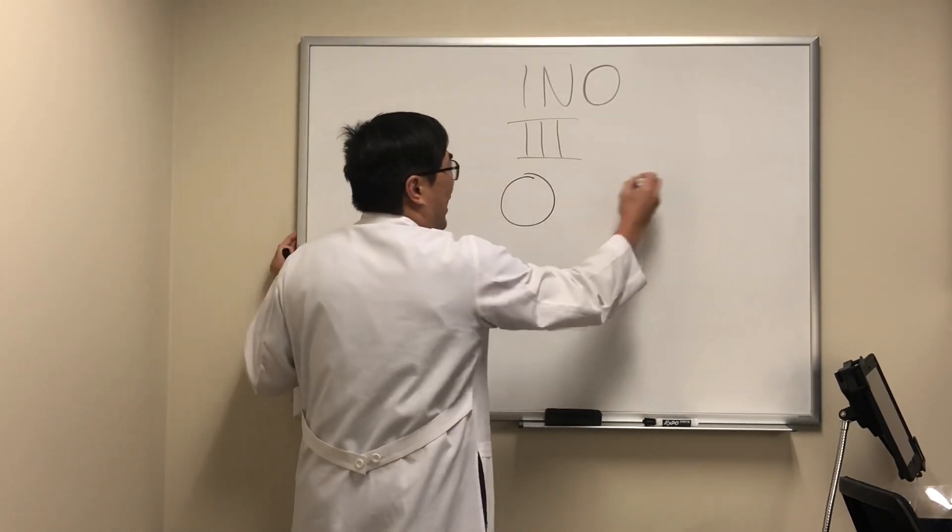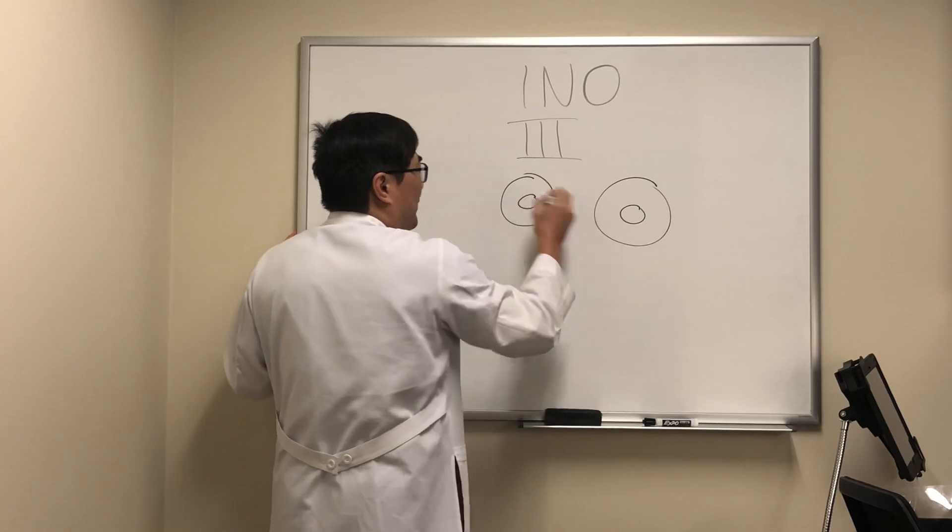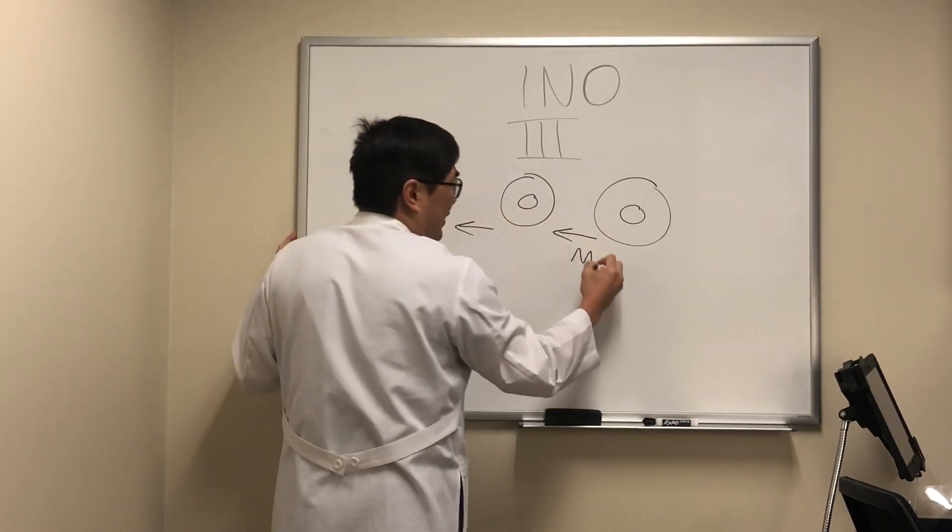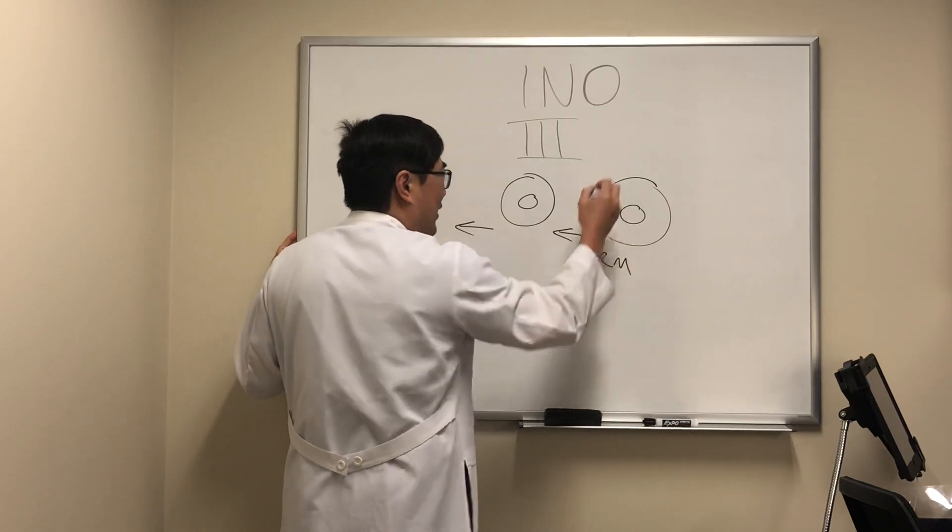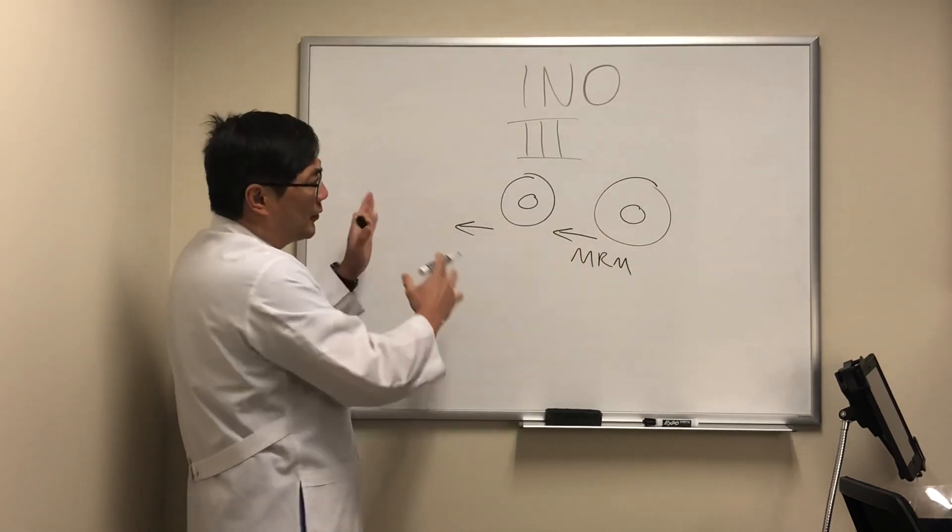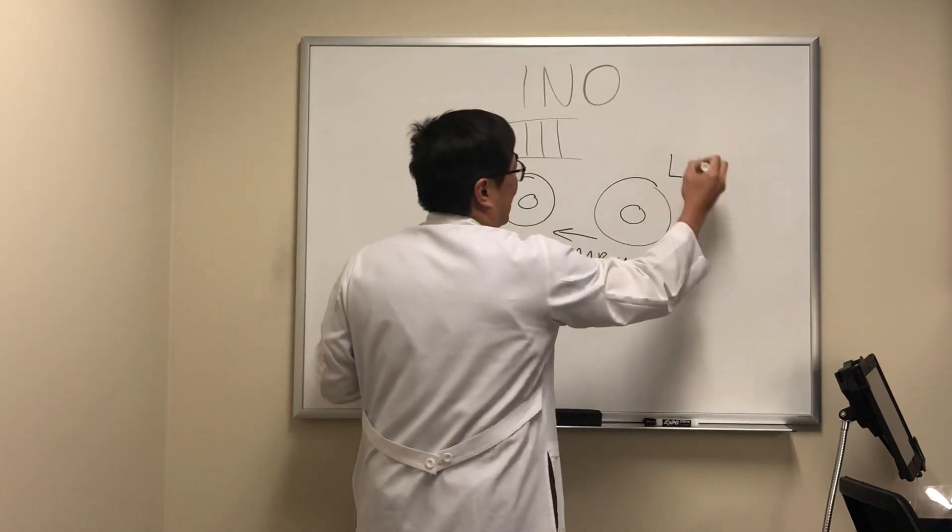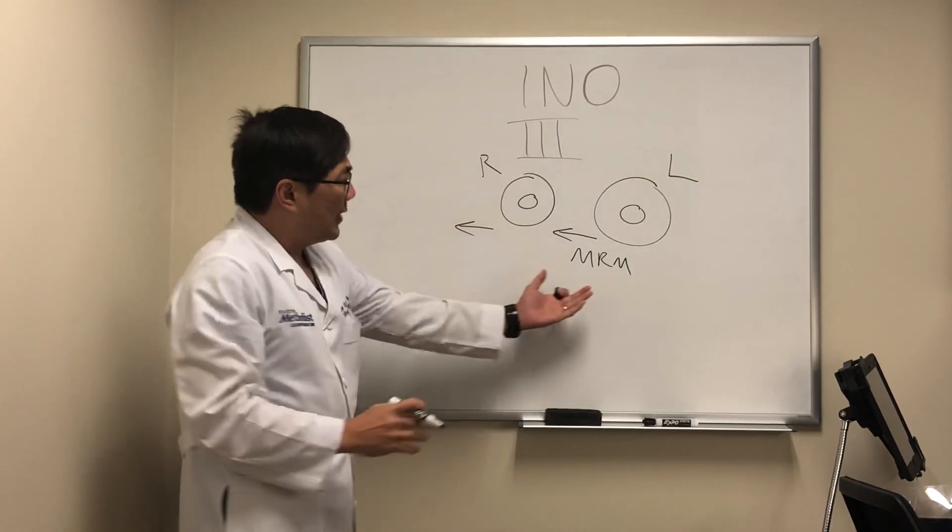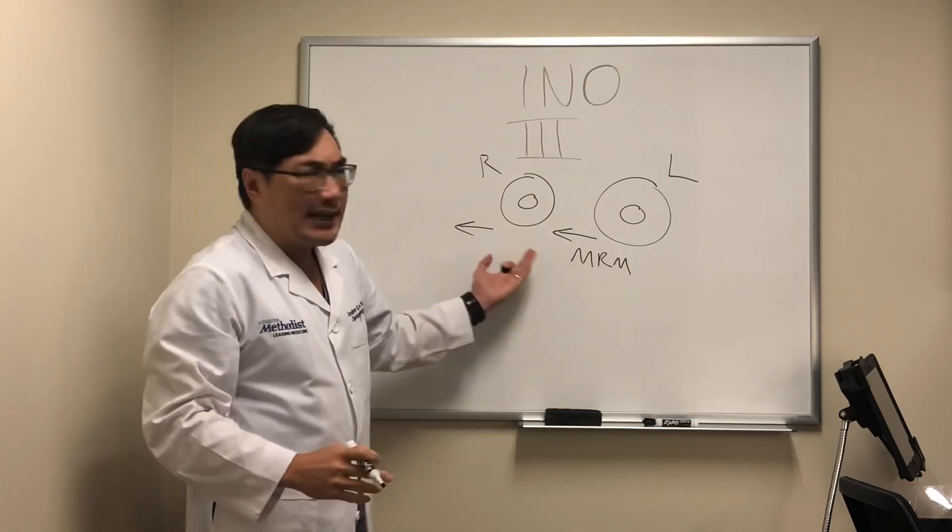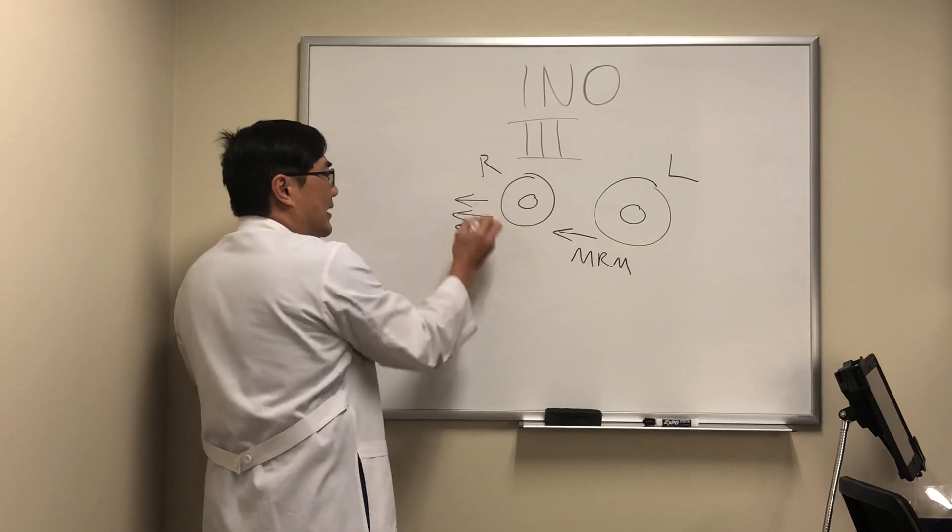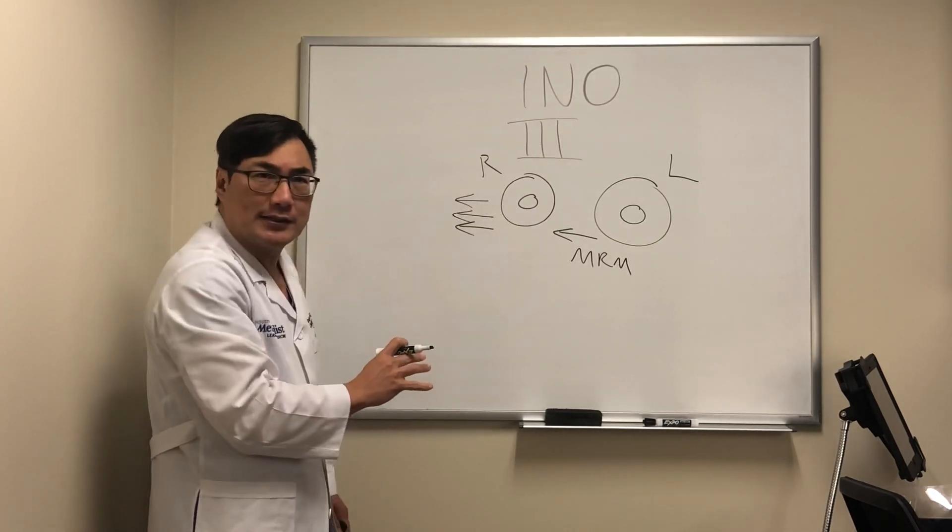As you know, when you have an internuclear ophthalmoplegia, you're going to have an adduction deficit because the medial rectus muscle of the involved eye is having a problem. In this example, this is the right eye, this is the left eye. We have a medial rectus muscle that cannot adduct, and when they try and look to the right, we're going to have an abducting dissociated horizontal nystagmus.